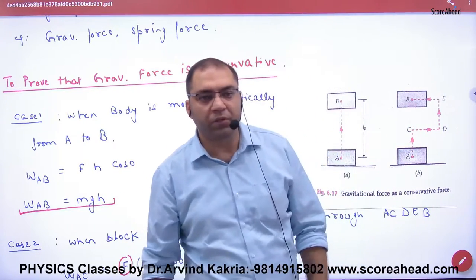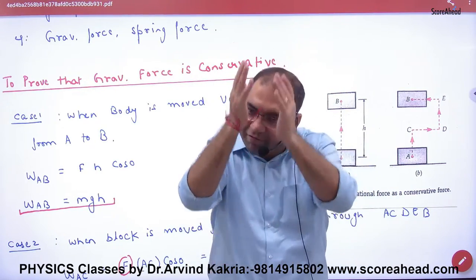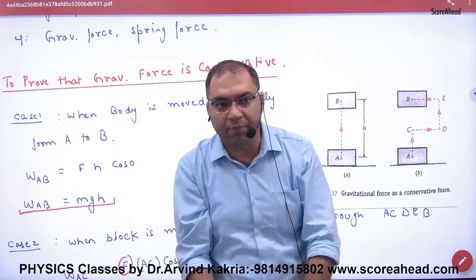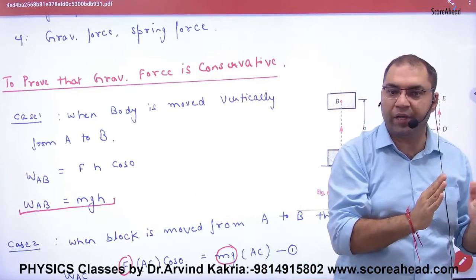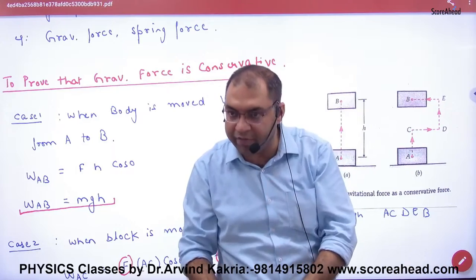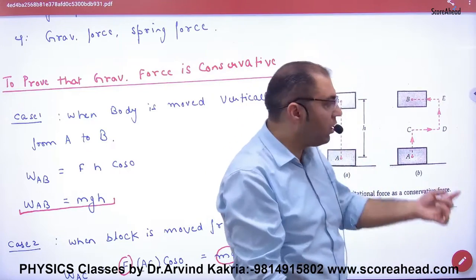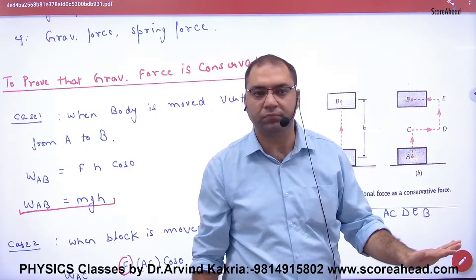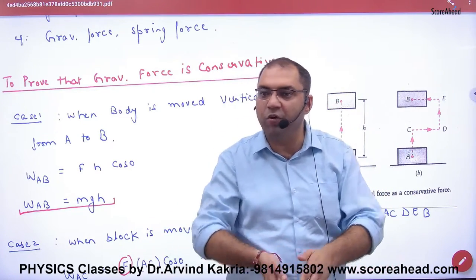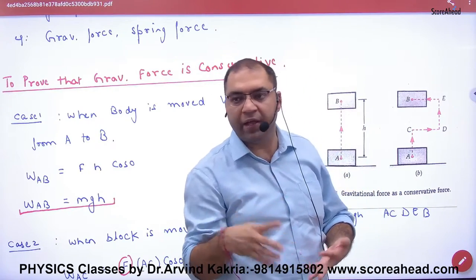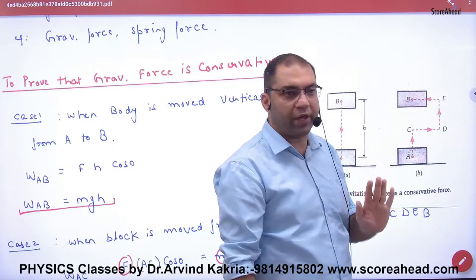For the horizontal segments, the gravitational force is vertical but displacement is horizontal, so the angle between them is 90 degrees. Therefore, the work done along CD is zero and the work done along EB is also zero. Both horizontal path segments contribute zero work done.